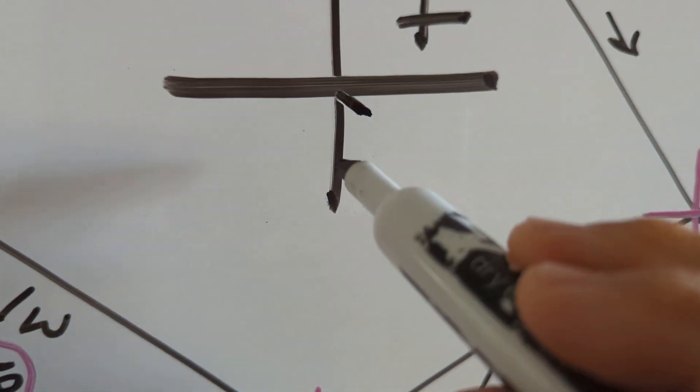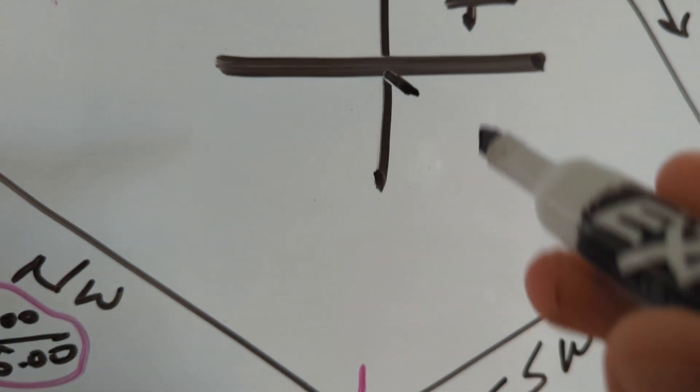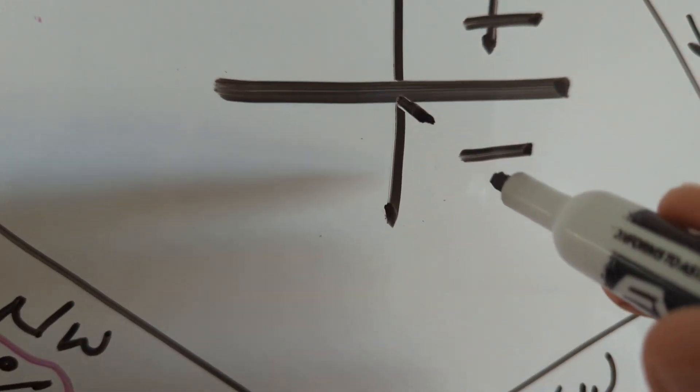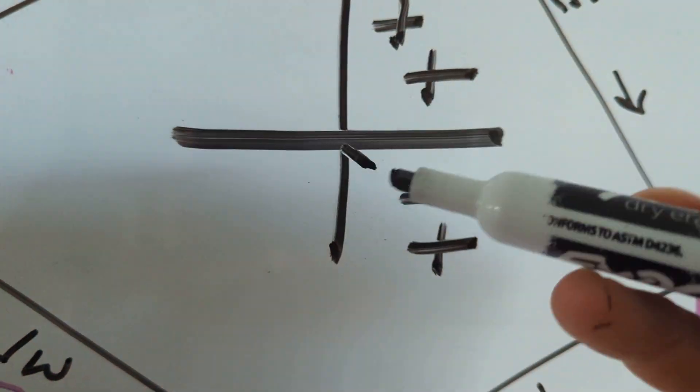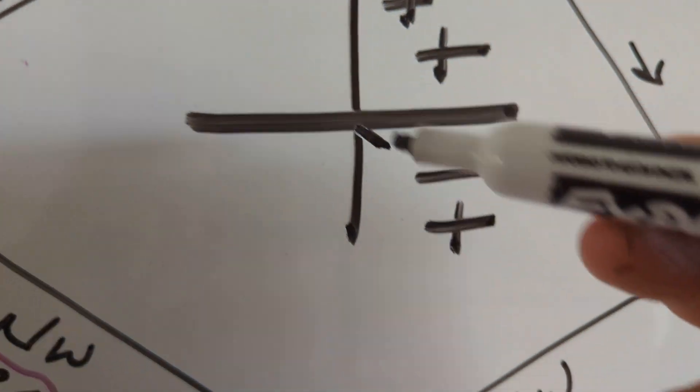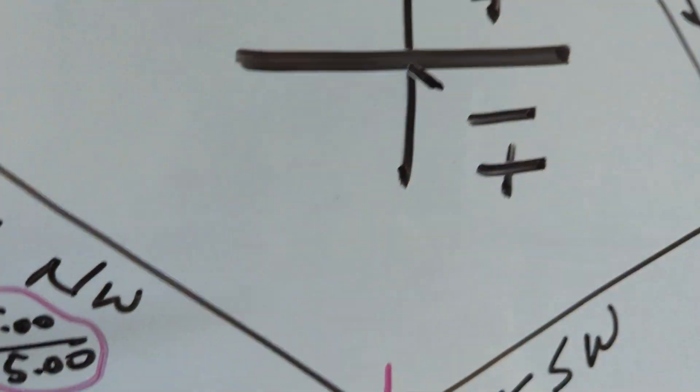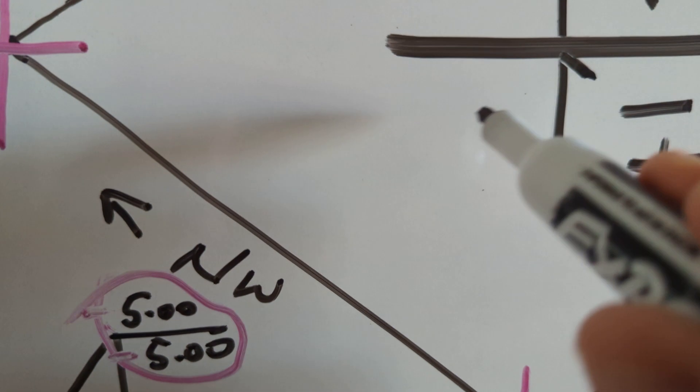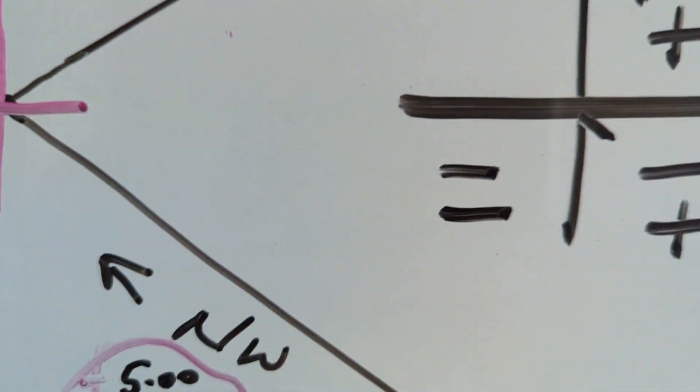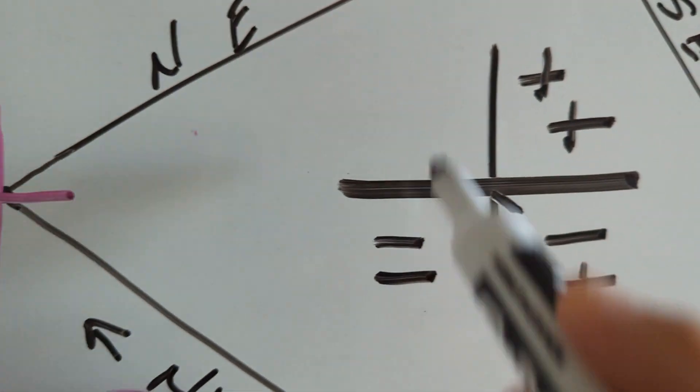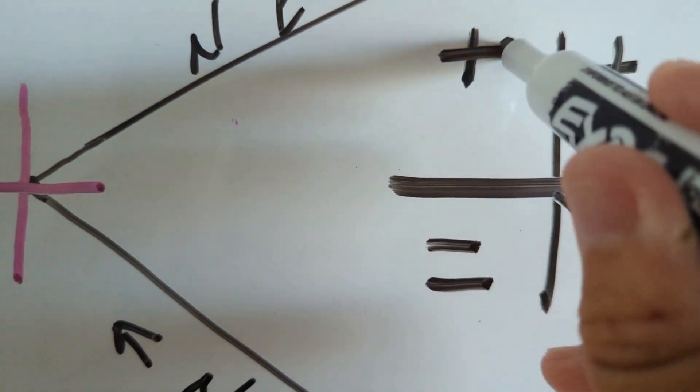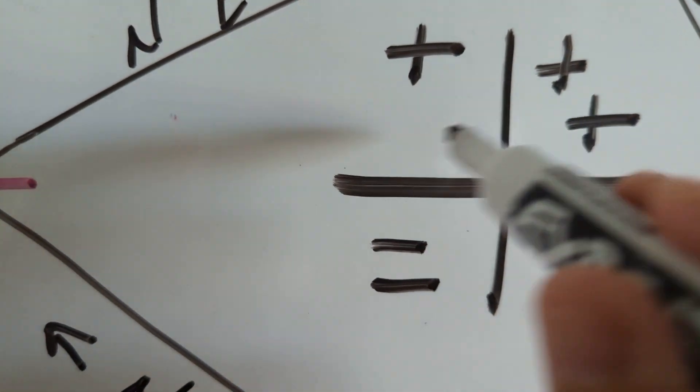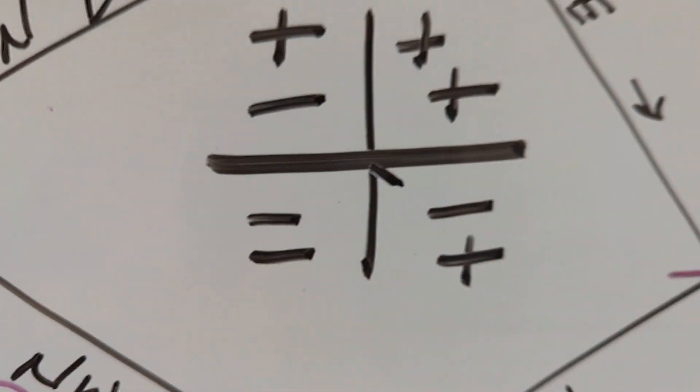If it's a southeast bearing, your northing is going to be a minus, but your easting is going to be a plus, because obviously you're taking away from the northing. You're going down, but you're still heading east. On a southwest bearing, both are negatives. And on a northwest bearing, north is a plus. North is always a plus. And the easting is going to be a minus.